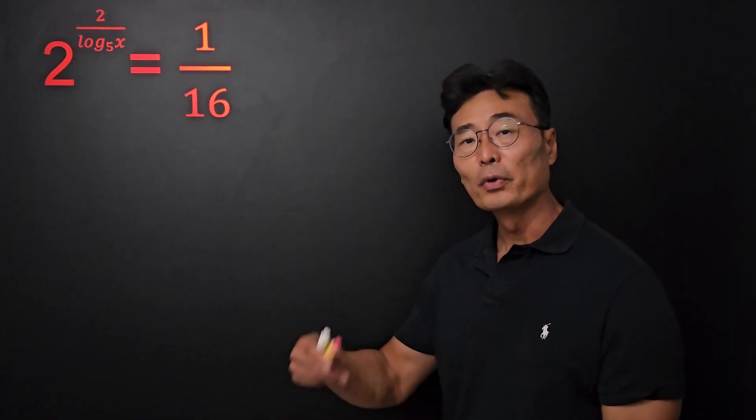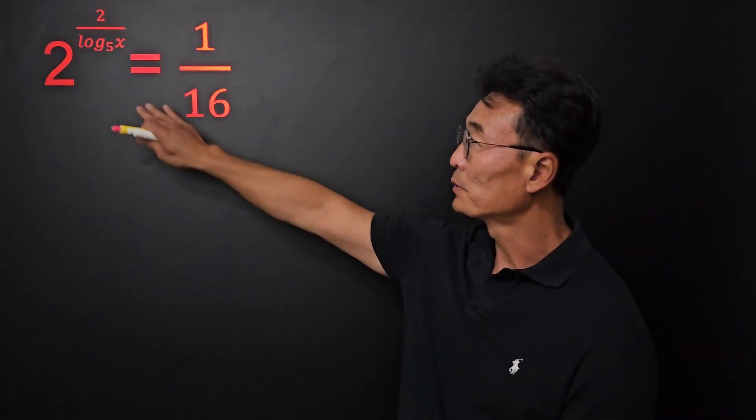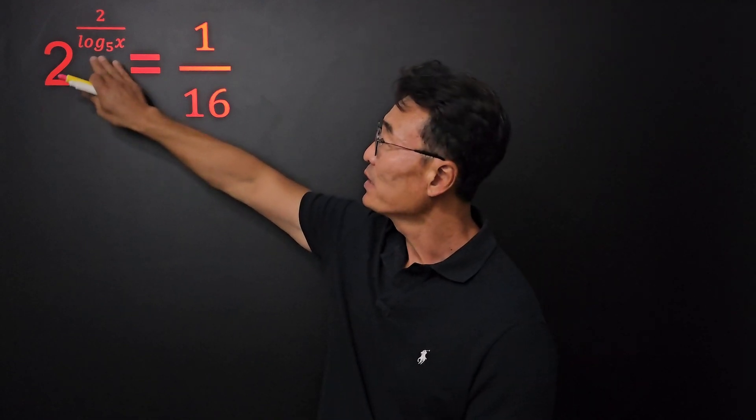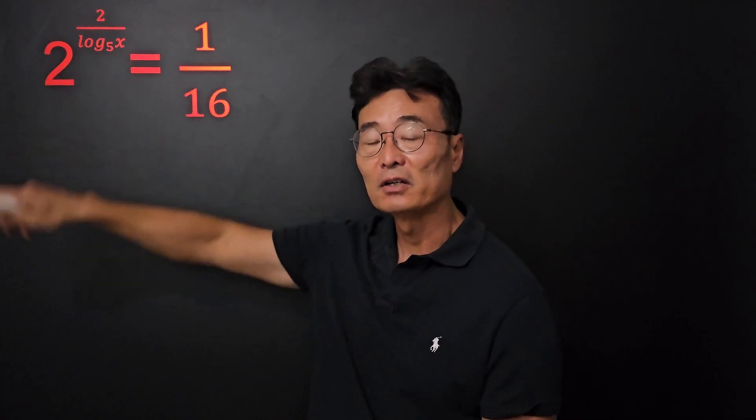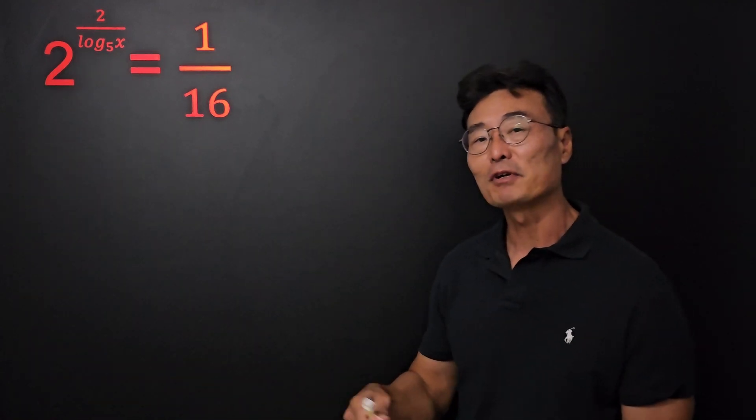This is what we call a problem within a problem. We have an exponential equation here with the variable in the exponent position with the log, so it's almost as if we have a problem within a problem within another problem.